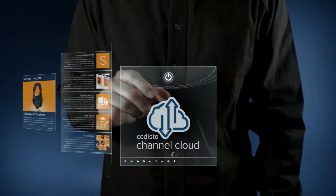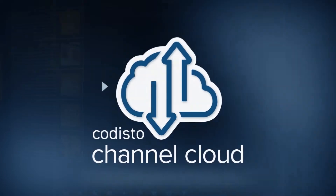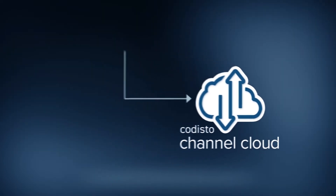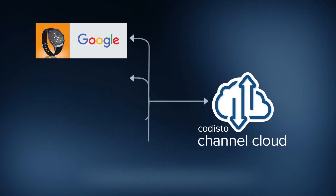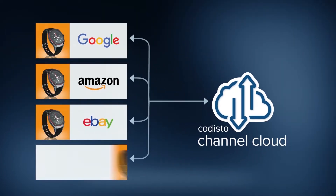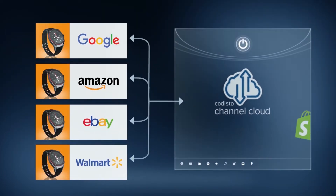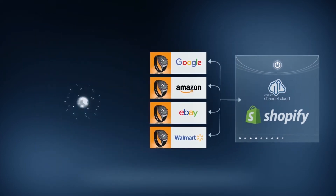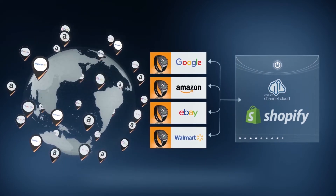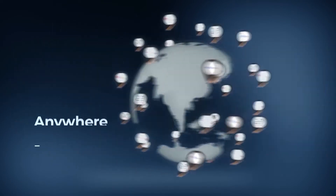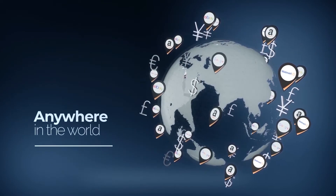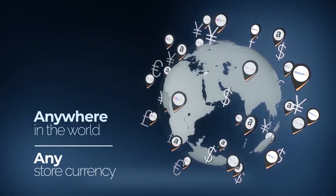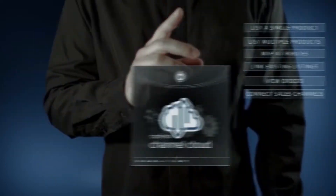Cadisto Channel Cloud makes it easy for you to sell on Google, Amazon, eBay, and Walmart directly from Shopify. Connect to any site globally and sell anywhere in the world in any store currency.